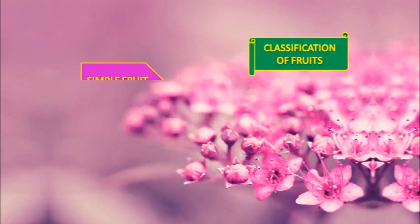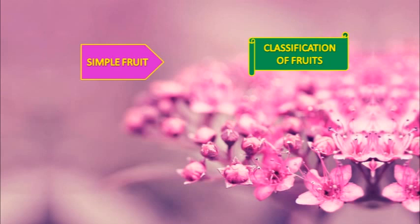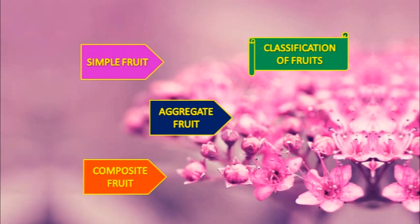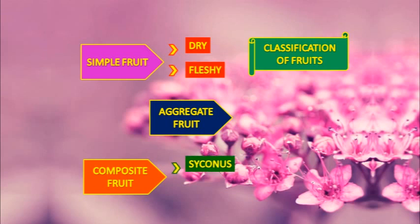Now, come to the classification of fruit. There are three main types: simple fruit, aggregate fruit, and composite fruit. Simple fruit is again divided into two — dry and fleshy. Composite fruit is divided into two — sorosis and syconus.